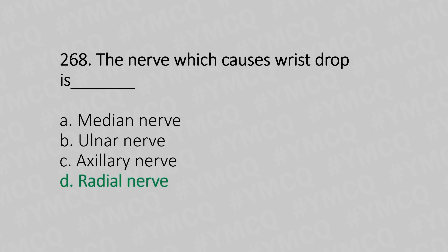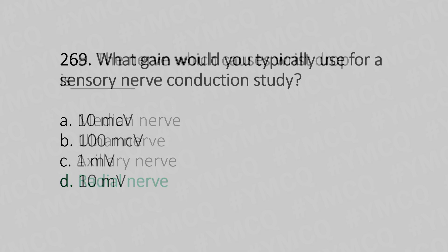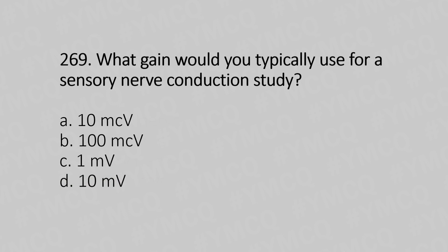Now let's move to question number 269. What gain would you typically use for a sensory nerve conduction study? Option A, 10 microvolts; Option B, 100 microvolts; Option C, 1 millivolt; Option D, 10 millivolts. And the answer is Option A, 10 microvolts.